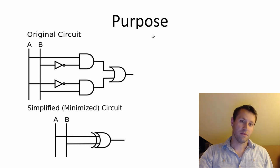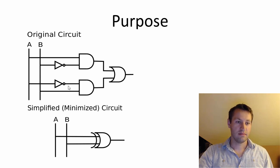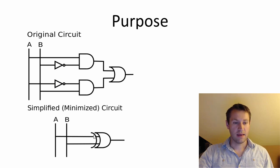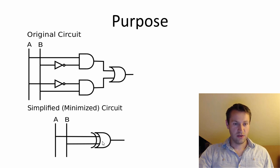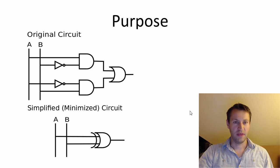Real quick — the purpose. You have an original circuit with some NOT gates, AND gates, and OR gates, and boom, that's the same thing as this crazy-looking circuit here. That's nice. You don't need to have all these extra gates — you can just have one. And that's a resource minimization thing. That's good. I'm not going to argue with that.